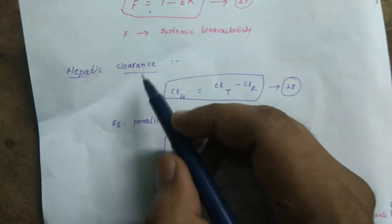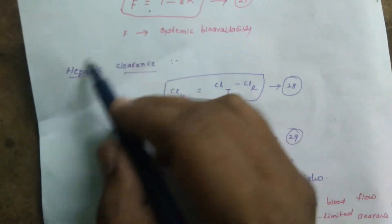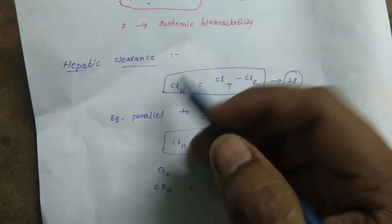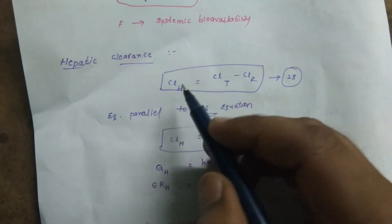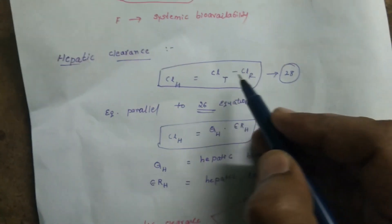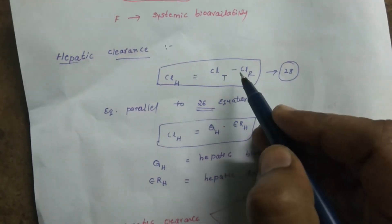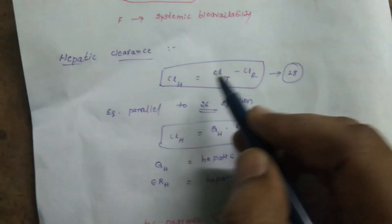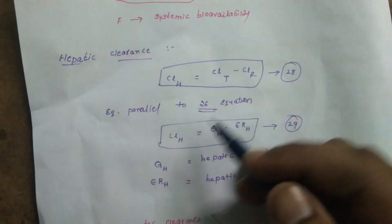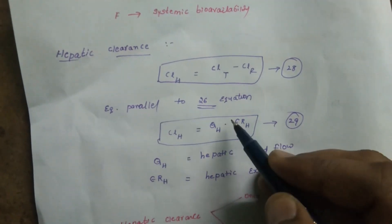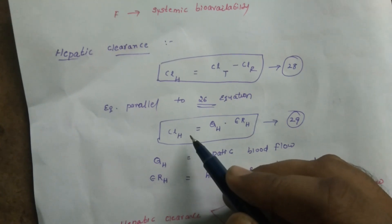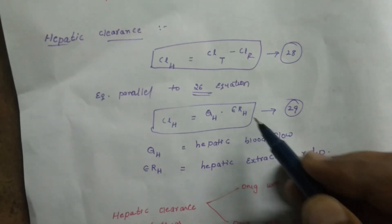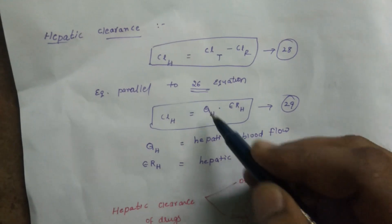Hepatic clearance can be estimated by two methods: by subtracting renal clearance from total clearance, or by using the equation: hepatic clearance equals QH × ERH, where QH is the hepatic blood flow and ERH is the hepatic extraction ratio.